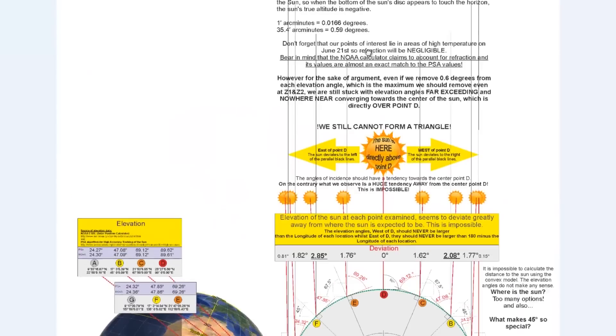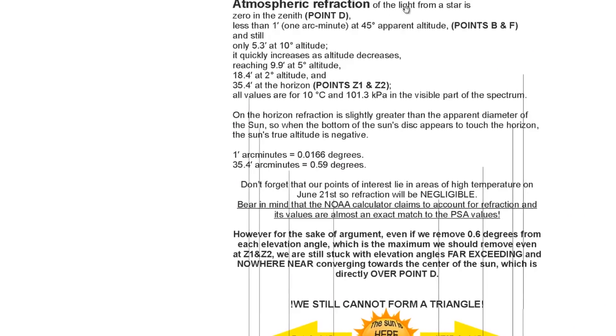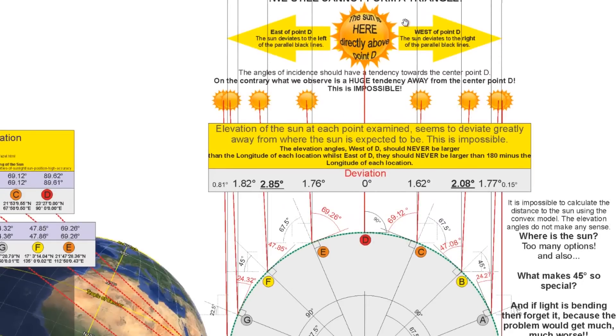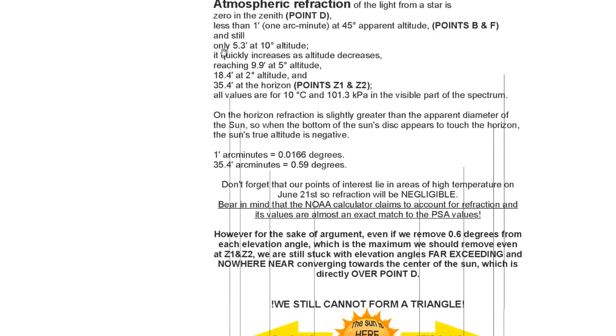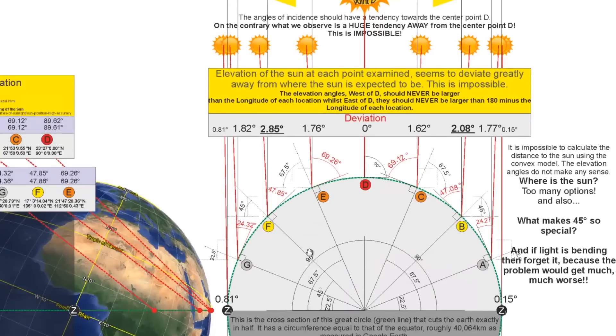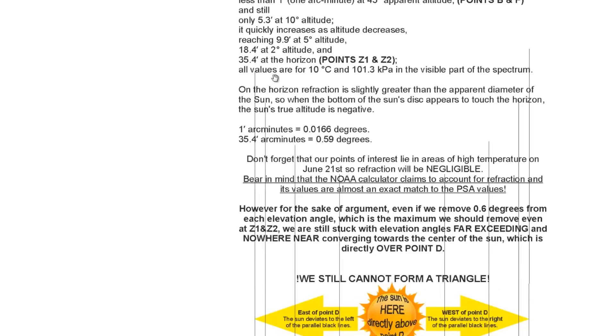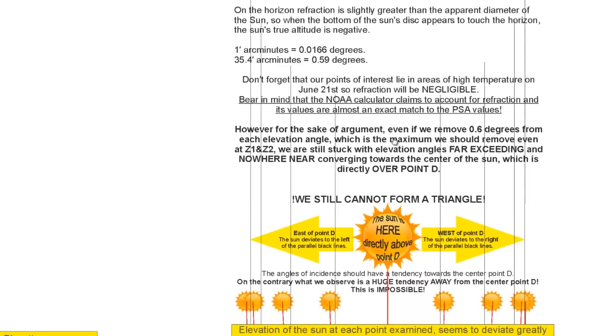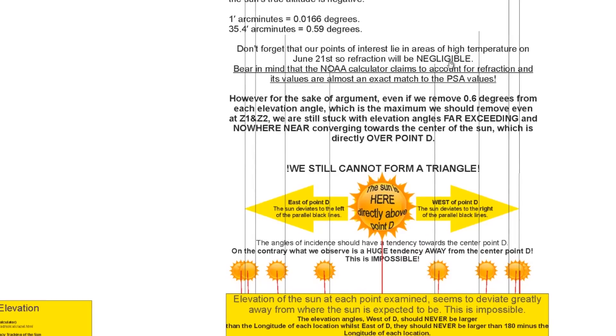Now, you're all wondering about atmospheric refraction if that has any effect. Well, atmospheric refraction of the light from a star is zero in the zenith, which is point D. Less than one arc minute at 45 degrees current altitude, that's points B and F. At B and F, we should have less than one arc minute deviation. And still only 5.3 minutes at 10 degrees altitude. It quickly increases as altitude decreases, reaching 10 minutes at 5 degrees. 36 arc minutes at the horizon, which is points Z1 and Z2, should have about 36 minutes deviation. On the horizon, refraction is slightly greater than the apparent diameter of the Sun. So when the bottom of the Sun disk appears to touch the horizon, the Sun's true altitude is negative. One arc minute is a very small amount. 36 arc minutes is just over half a degree. Don't forget there are points of interest lying in areas of high temperature at June 21st, so refraction will be negligible.